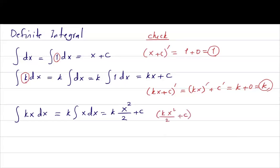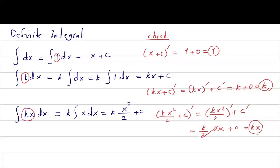This is the antiderivative we're introducing here. You can check the work: when you have k x squared divided by 2 plus c and take the derivative, this is the derivative of k x squared over 2 plus the derivative of c, which can be written as k divided by 2 times 2x plus 0. The 2's cancel out, giving k x. Since k x and k x are the same, our integral is correct. In general, for the power function k x to the n...